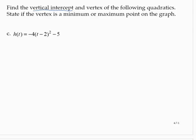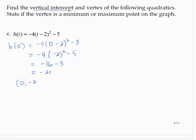The vertical intercept. Again, we would find h of 0. And we have negative 4 by 0 minus 2 squared minus 5. Negative 4 by negative 2 squared minus 5. So that's negative 4 by 4. Negative 16 minus 5 is negative 21, so 0, negative 21.